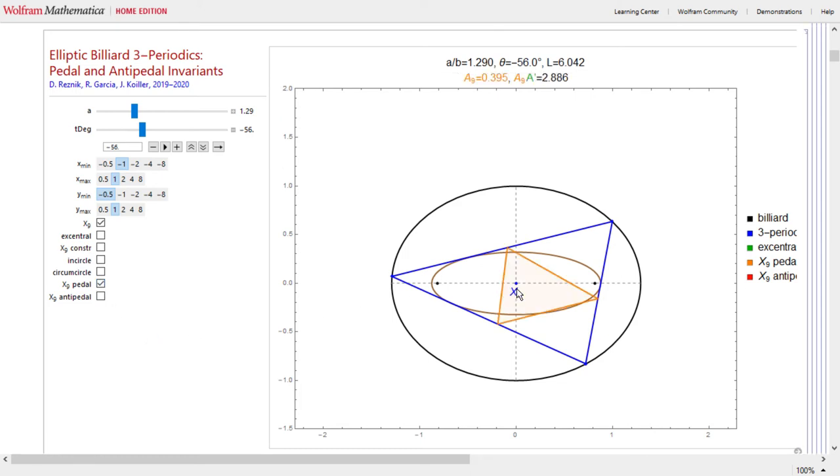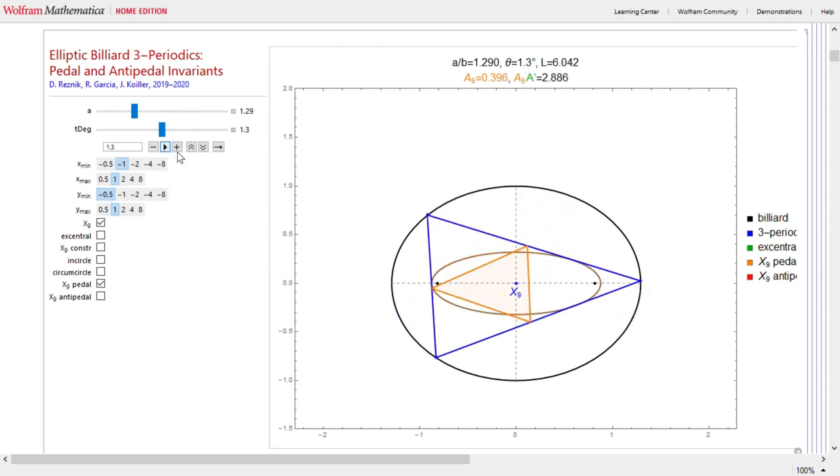Let me clean up the environment here and let's talk about the stationary meeting point and its associated pedal triangle. What's a pedal triangle? Imagine I'm dropping a perpendicular from the stationary meeting point down each one of the sides of the three-periodics and the feet of these perpendiculars define the vertices of the so-called pedal triangle with respect to X9. X9 is its pedal point.